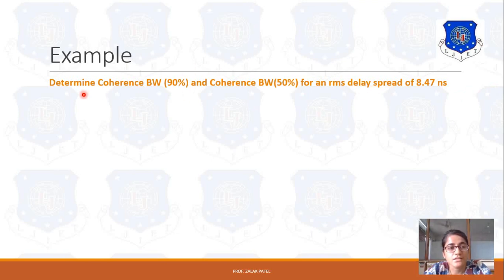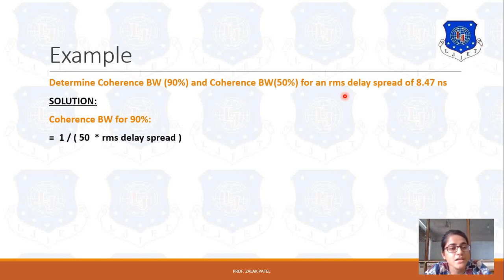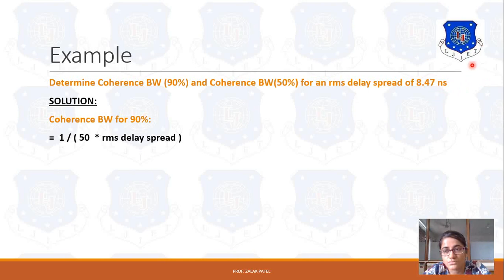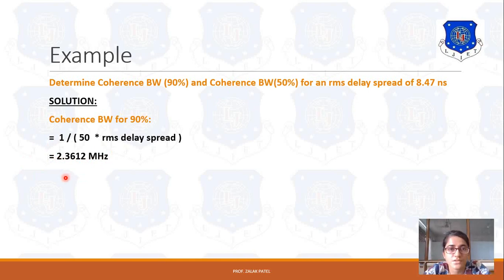In that case, we have to find out the 0.9 coherence bandwidth case and the 0.5 coherence bandwidth case. For the coherence bandwidth at 90%, it is given by 1 upon 50 into RMS delay spread. The RMS delay spread is 8.47 nanoseconds, that is 8.47 into 10 to the power minus 9. Taking the inverse gives 2.3612 megahertz, that is 2.36 into 10 to the power 6 hertz.